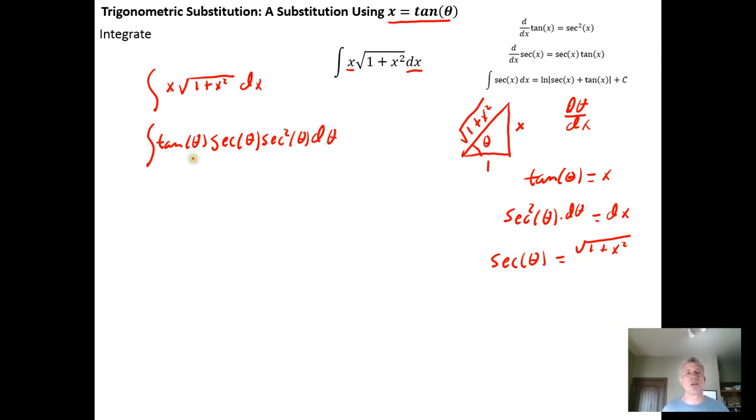And then what I want to notice here is that tangent times secant is the derivative of the secant. So at this point, the substitution u equals secant of theta would make sense because du/dθ would equal secant theta tangent of theta. So a u substitution, letting u equal the secant of theta, would make a lot of sense here. So replace the secant theta squared with u squared right here using this u substitution.